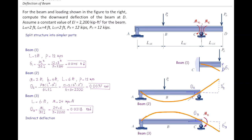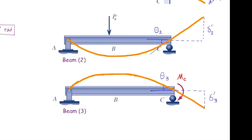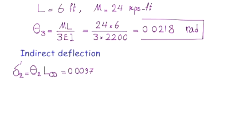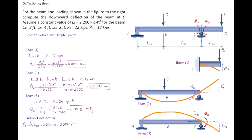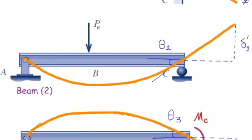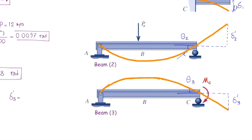Delta prime two equals theta two times L_CD, which is 0.0097 times 2 feet, giving 0.0194 feet. Delta prime two goes upward because force P bends the beam downward. Delta prime three equals theta three times L_CD, which gives 0.0436 feet, and this one goes downward.